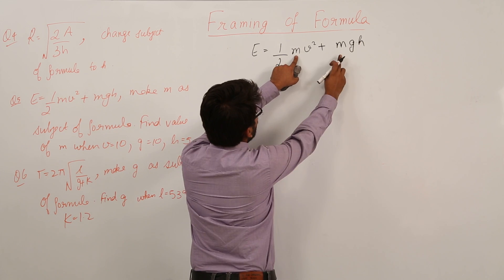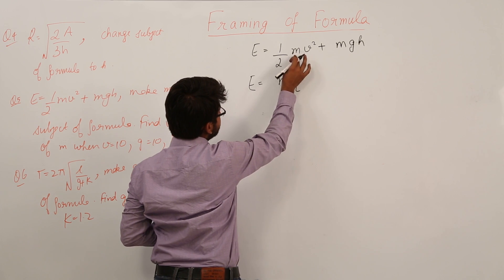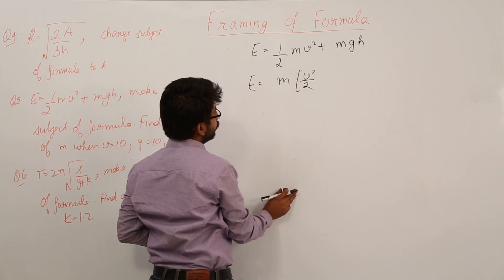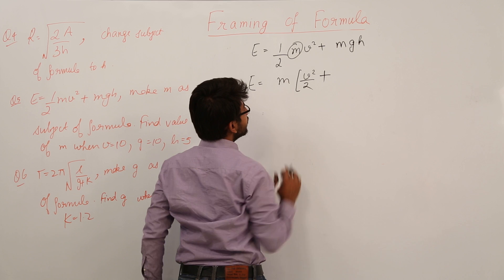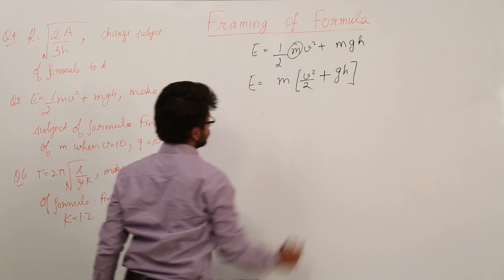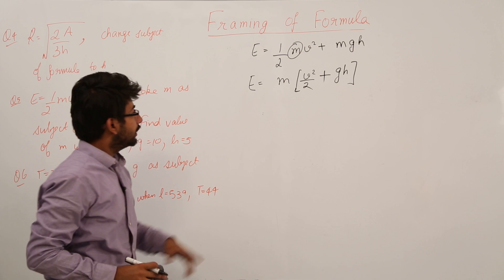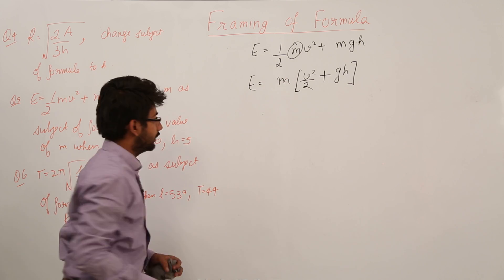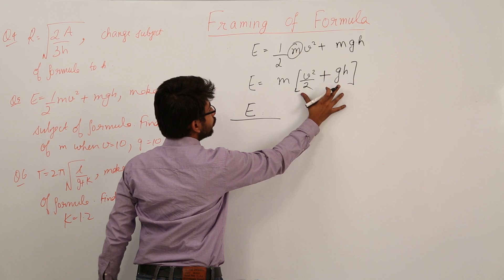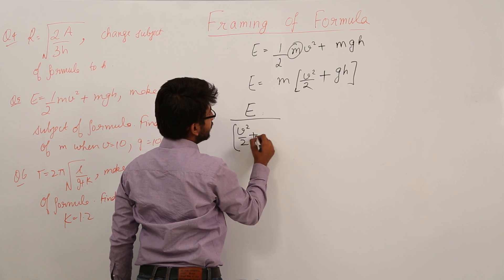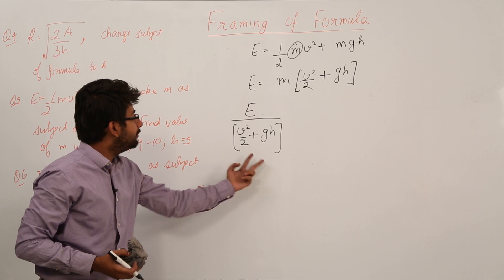Let us take m common from both terms. We have e equals m into v squared divided by 2 plus g times h. Now take the whole bracket to the other side of the equality sign — since it is in multiplication with m, it becomes the denominator, giving m equals e divided by (v squared by 2 plus gh).